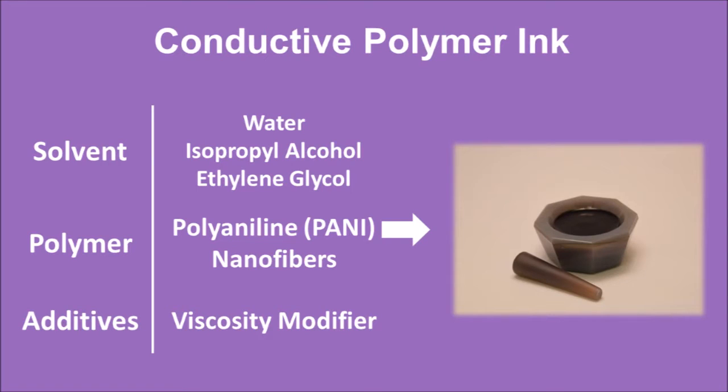To make a conductive polymer ink, we disperse our polyaniline nanofibers in water, we add isopropyl alcohol so it dries more quickly, and ethylene glycol and viscosity modifier so that you have a smoother writing experience.